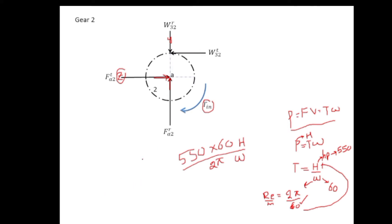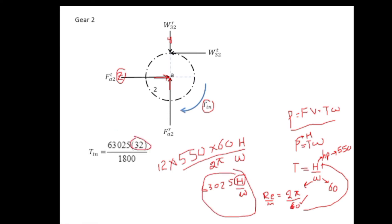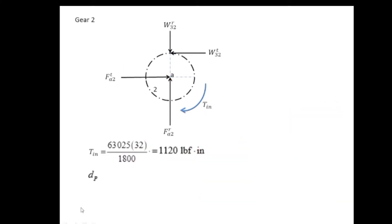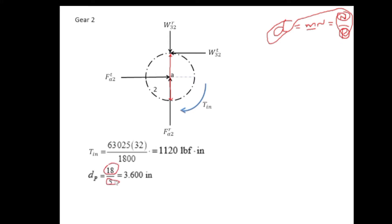The torque formula simplifies to T = 63,025 × H / ω, with torque in lbf·in. For the given problem, power H = 32 hp and ω = 1800 rpm, so torque T = 1120 lbf·in. Next, the diameter of gear two: d = N/P, where N is number of teeth and P is diametral pitch. For gear two, d2 = 18/5 = 3.6 inches. For gear three, d3 = 45/5 = 9 inches.